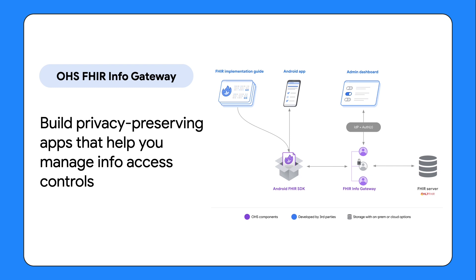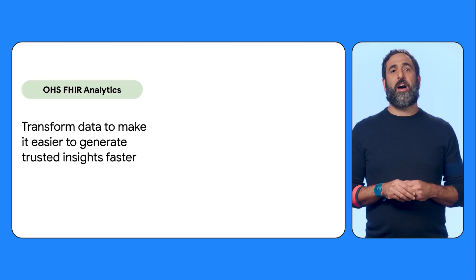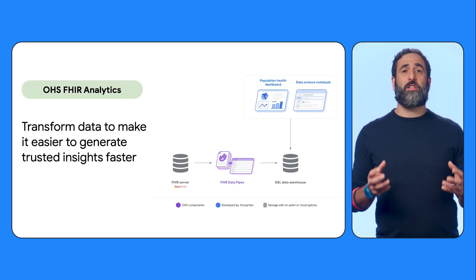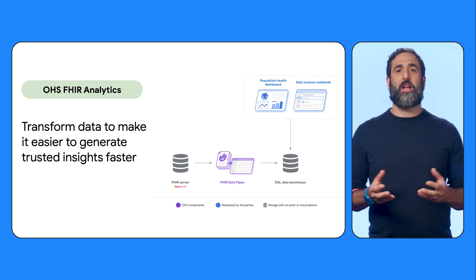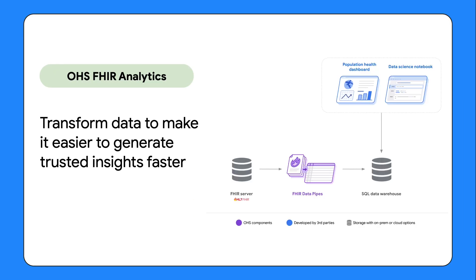Third is our FHIR analytics components, designed to help developers build horizontally scalable analytics solutions on top of FHIR data that can be deployed into on-prem or cloud environments. Using FHIR data pipes, developers can deploy pipelines to continuously transform FHIR data from any FHIR source into analytics-friendly formats. They can power a range of use cases from building dashboards, doing data science, or machine learning. FHIR data pipes provides configurable views and seamless support for different data warehouses, from simple relational databases to horizontally scalable options, making it easy to query FHIR data using familiar setups in common languages like SQL or Python.